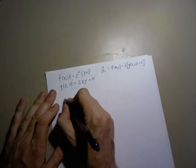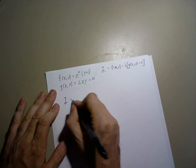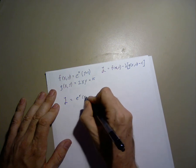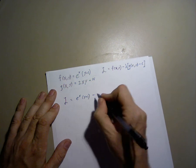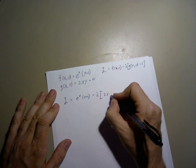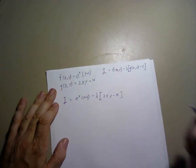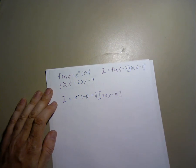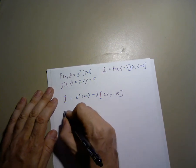So, we get e to the xy plus 1 minus lambda times 2xy minus 15, close bracket. Now, we take the partial x derivative.